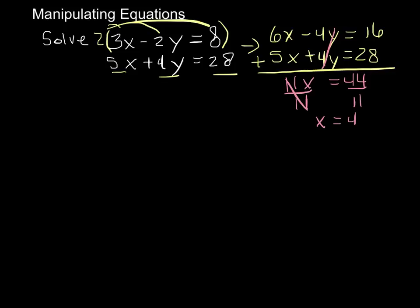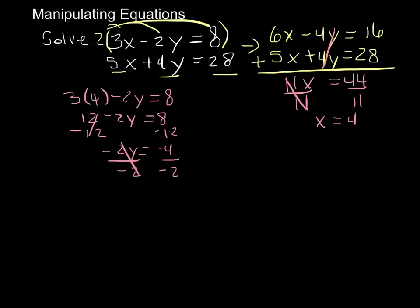And then at this point, what you can do is you substitute x back in to either one of the equations. Let's do the top one. 3 times 4 minus 2y is equal to 8. And then this says 12 minus 2y is equal to 8. So that means that y is equal to 2. And so what we would say is that these two lines intersect at the point 4 comma 2.